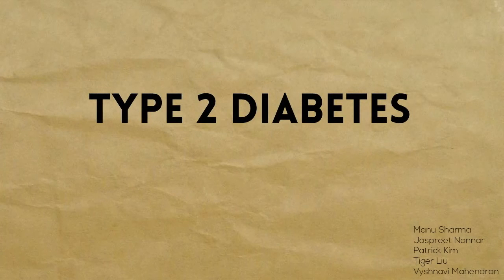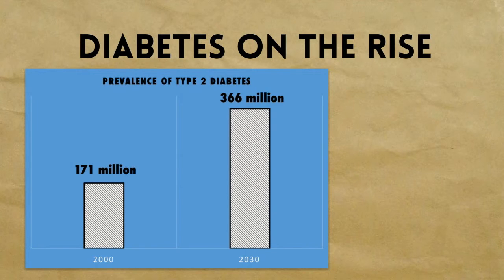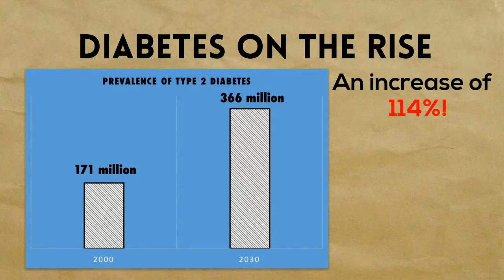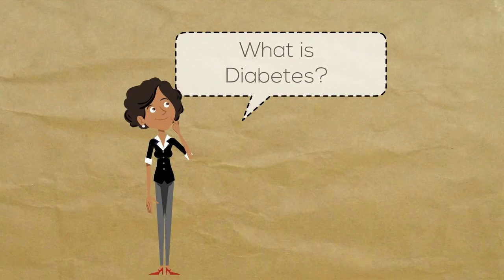Diabetes is a disease that is gathering much attention recently. It is on the rise in today's society, with no end in sight. For example, it was seen that in 2000, the prevalence of diabetes in all age groups across the world was 2.4%, with 171 million people having diabetes. In fact, it is expected that in 2030, this number will increase to 4.4%, and 366 million people will have diabetes.